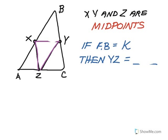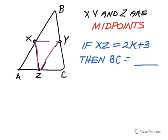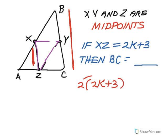In the next example, if ab equals k — this side of the triangle has a length of k, where k represents some number — then yz is going to be half of that, so yz equals k over 2, or one-half k. And in the next example, if xz equals 2k plus 3 — that's this piece right in here — and we're asked to find bc, we know bc is twice the length of xz. So bc equals 2 times (2k plus 3), which equals 4k plus 6.